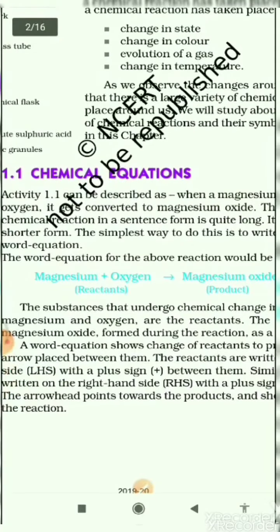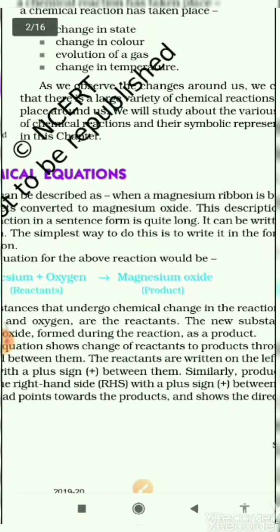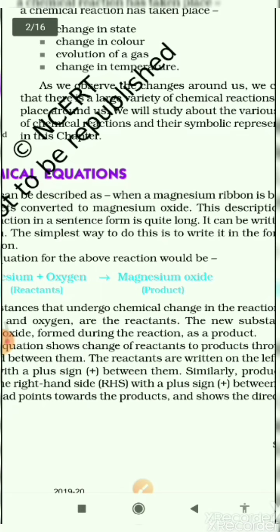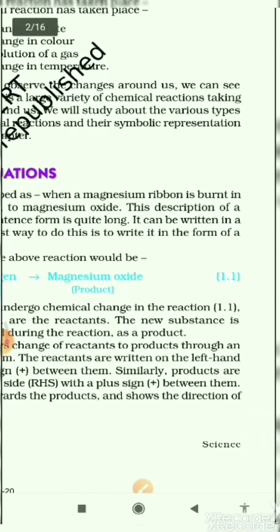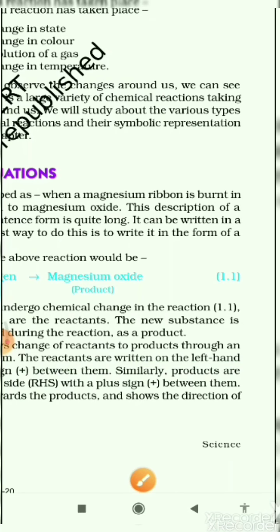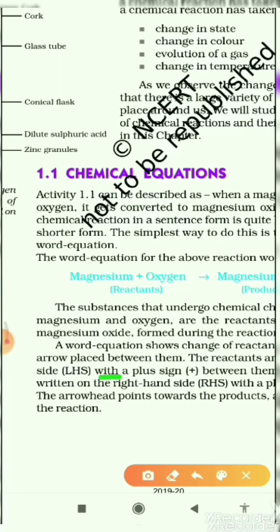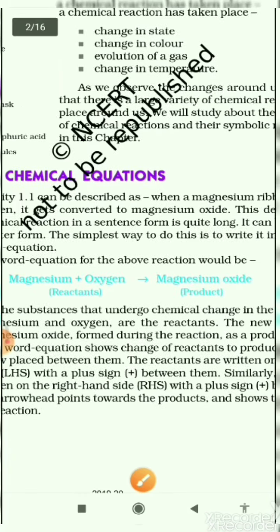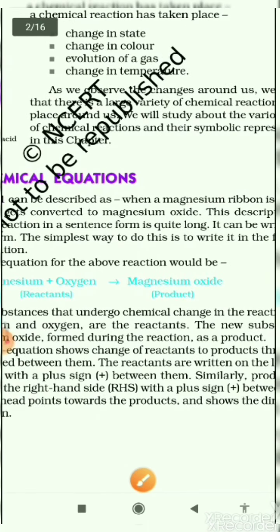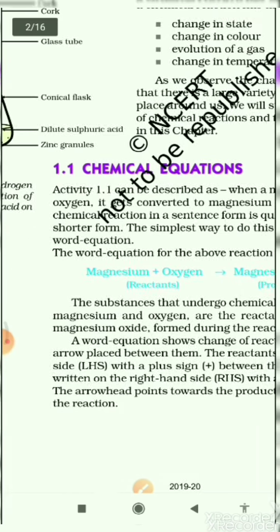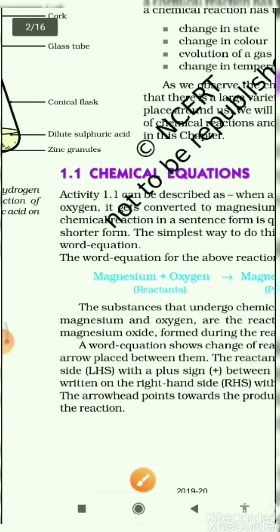In the last paragraph the same thing is written. The reactants are written on the left-hand side with a plus sign between them. The reactants are written on the left-hand side, and the product is written on the right-hand side.